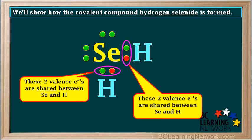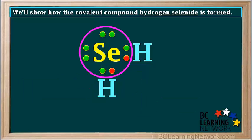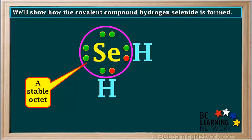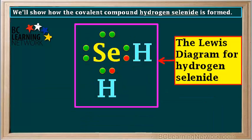And this is what we get. Notice that these two pairs of electrons are shared between the selenium and hydrogen atoms. The sharing of a pair of valence electrons between two atoms forms what is called a covalent bond. So we have two covalent bonds in this molecule. Now the selenium atom feels like it's surrounded by eight valence electrons, so we say that selenium has a stable octet. We can see now that both hydrogens feel like they have a pair of electrons in their valence shell, so they are stable, like the noble gas helium. The name of the compound formed is hydrogen selenide.